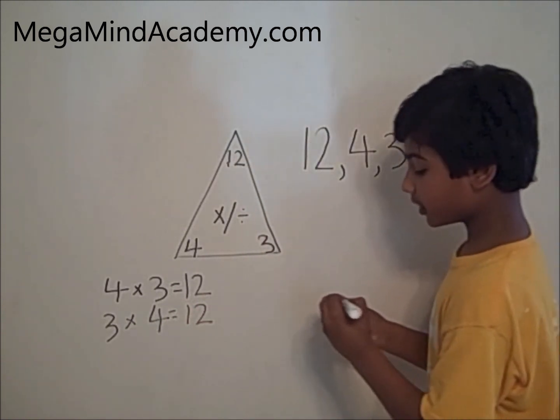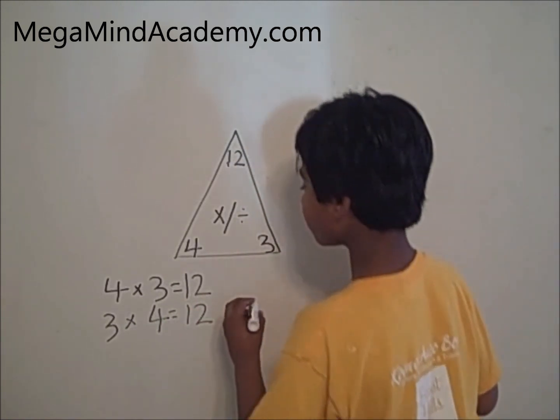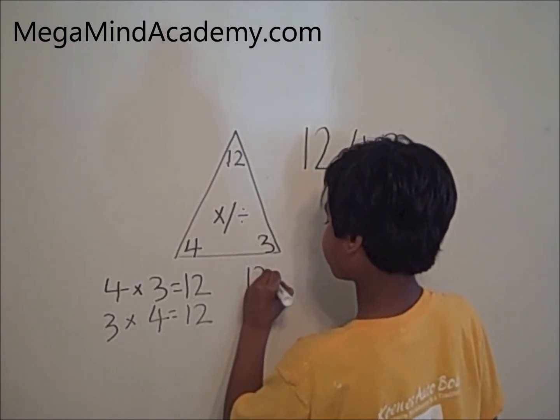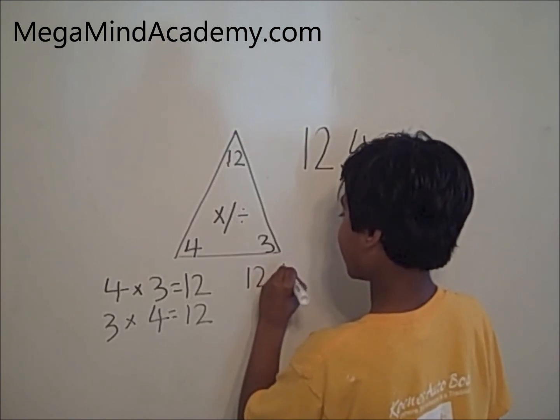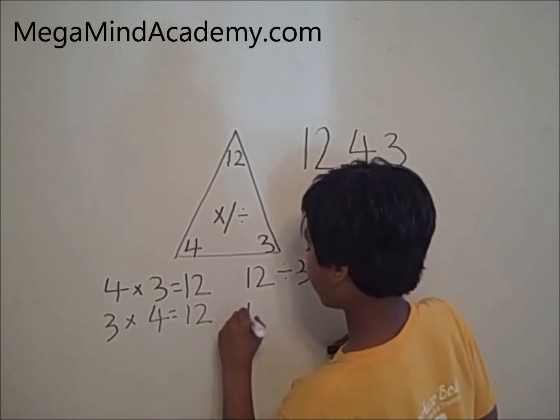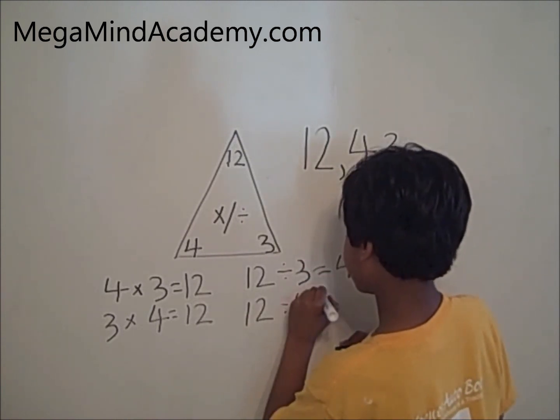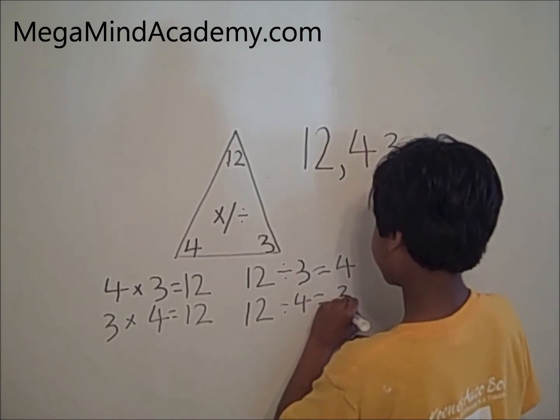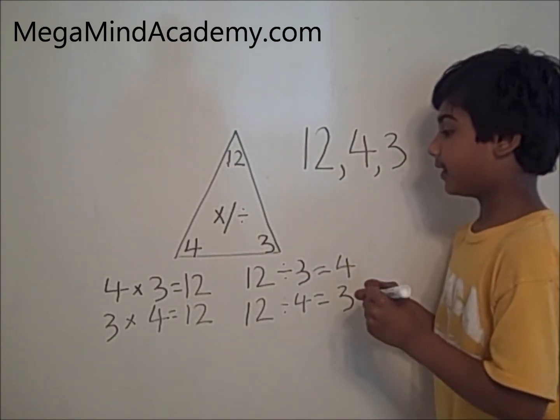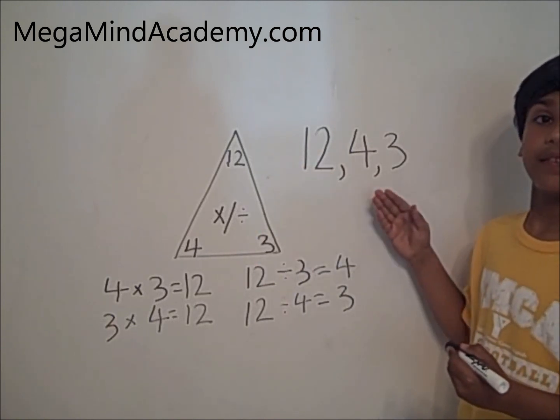Now let's do division relation among the numbers. 12 divided by 3 equals 4. 12 divided by 4 equals 3. This means 12, 4, and 3 is a fact family.